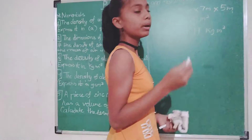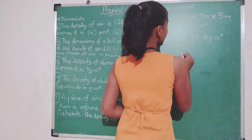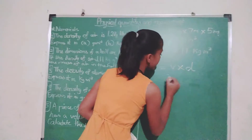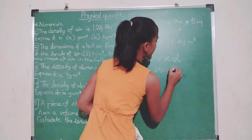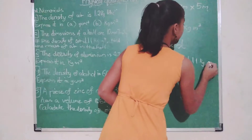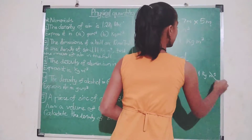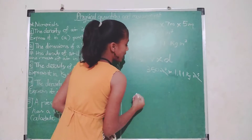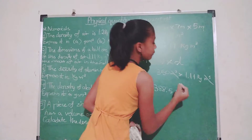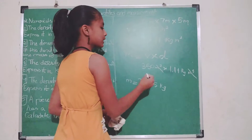Now we multiply using the formula: mass equals volume multiplied by density. Our volume is 350 meter cube and density is 1.11 kg per meter cube. The meter cube units cancel out, and our answer is 388.5 kg. We are left with kg, so the unit of mass is kg.